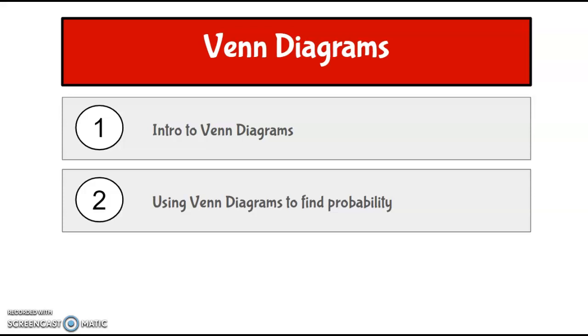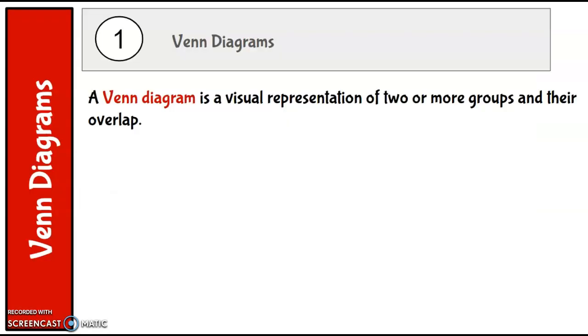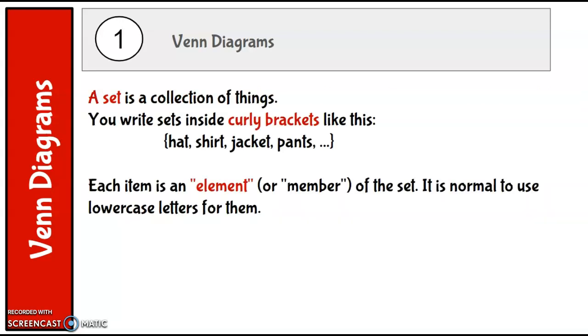In this video we're going to talk about Venn diagrams. We're briefly going to talk about what Venn diagrams are and then how we can use them to help us find probabilities. A Venn diagram is a visual representation of two or more groups and where they overlap.